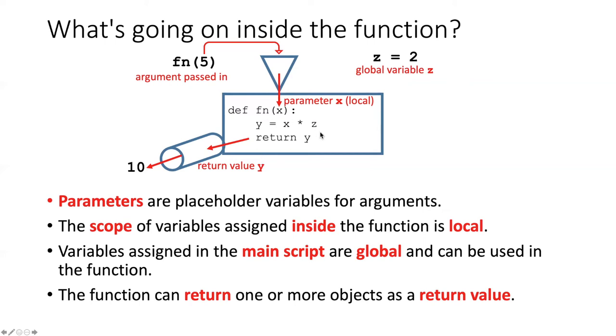Then once I've done whatever sorts of calculations I want to do inside the function, I have a return statement. So I say return and then which named object that I've worked with or created in the function that I want to return. And whatever that value is, is what comes out of the function as the return value.